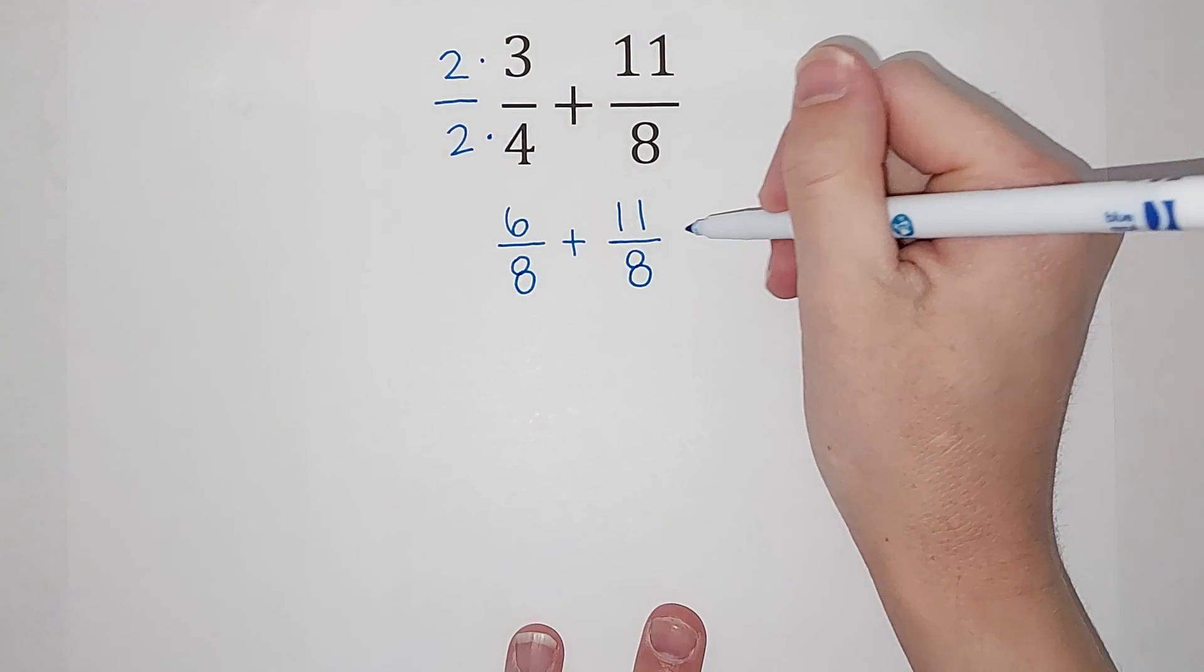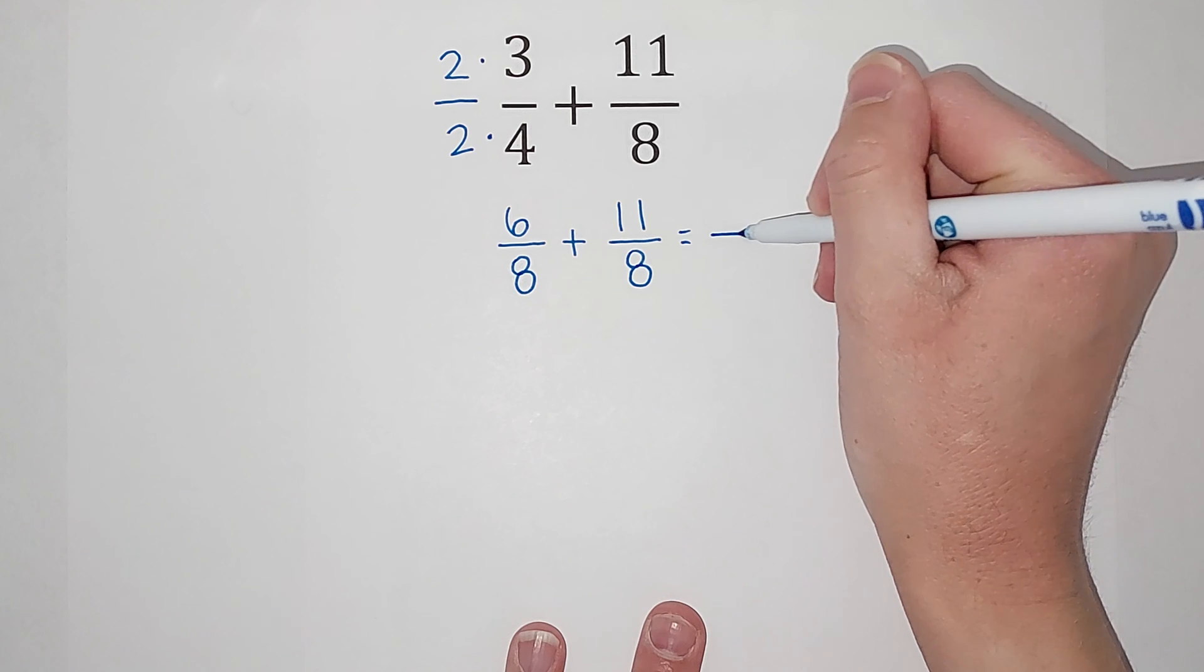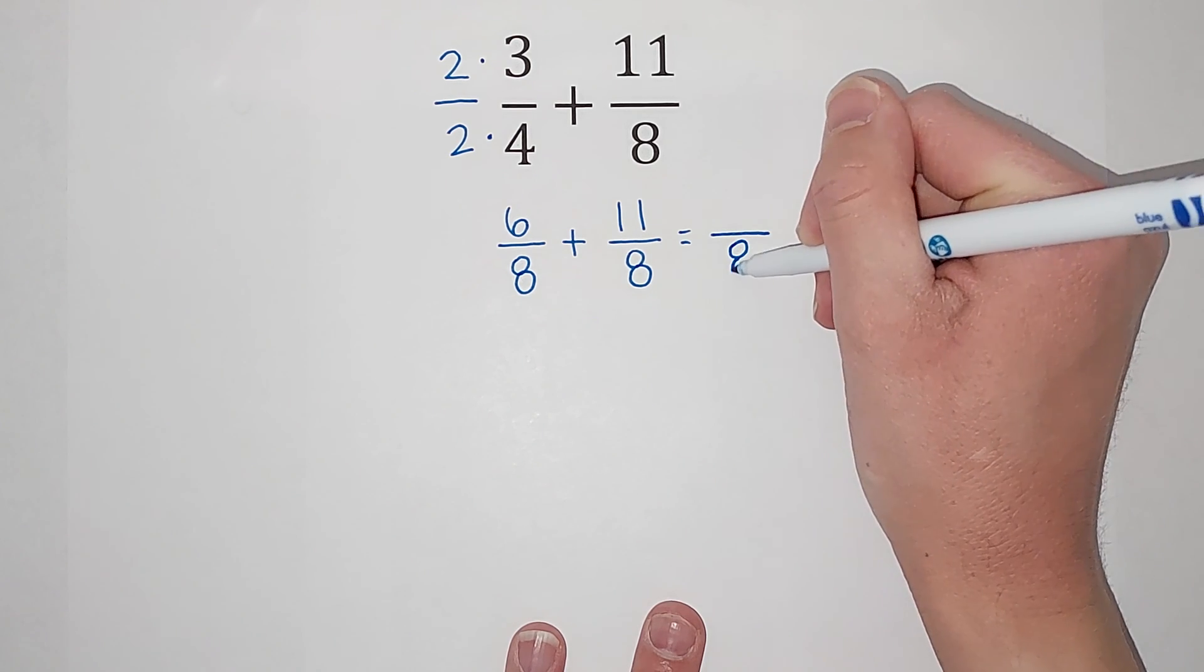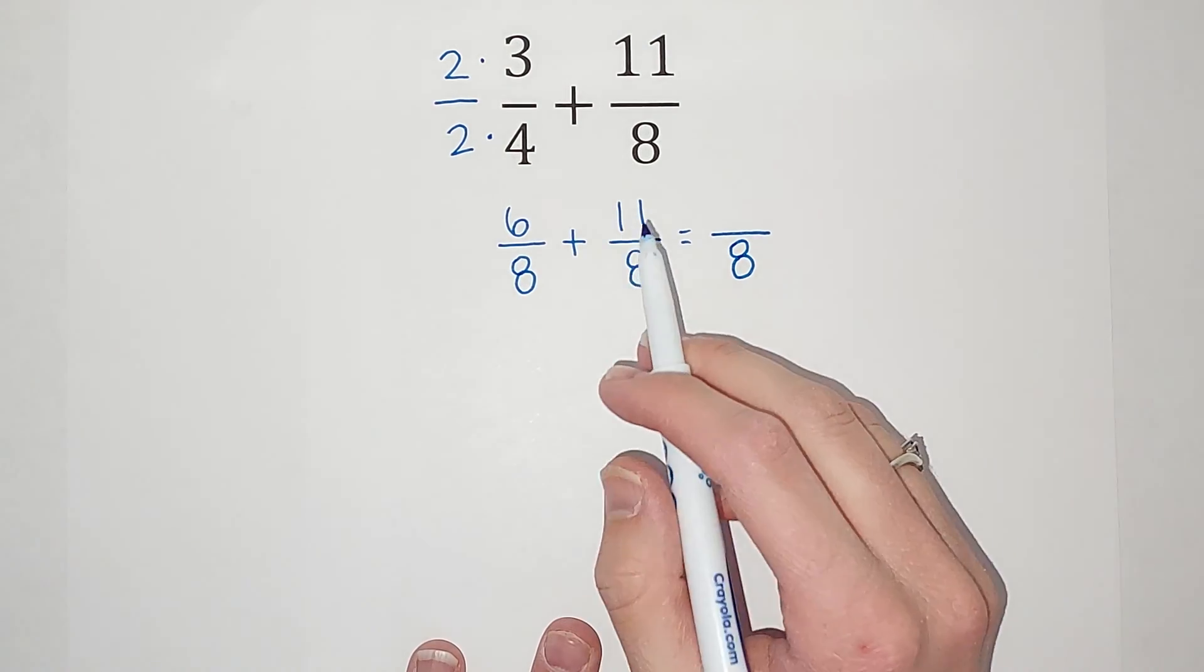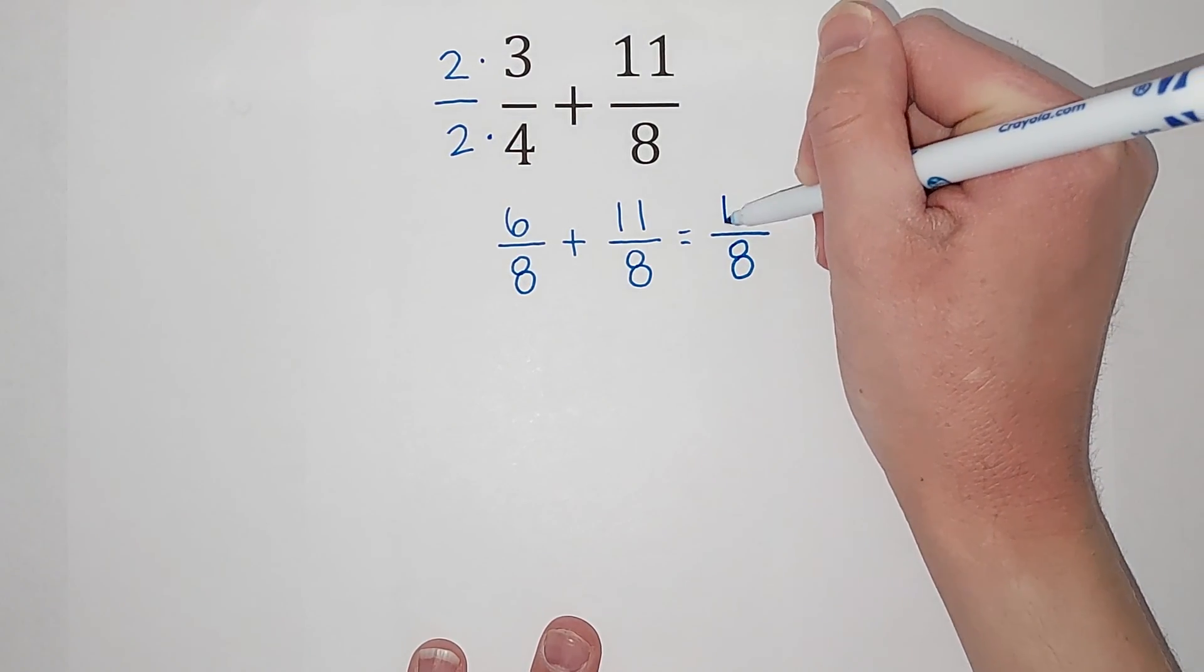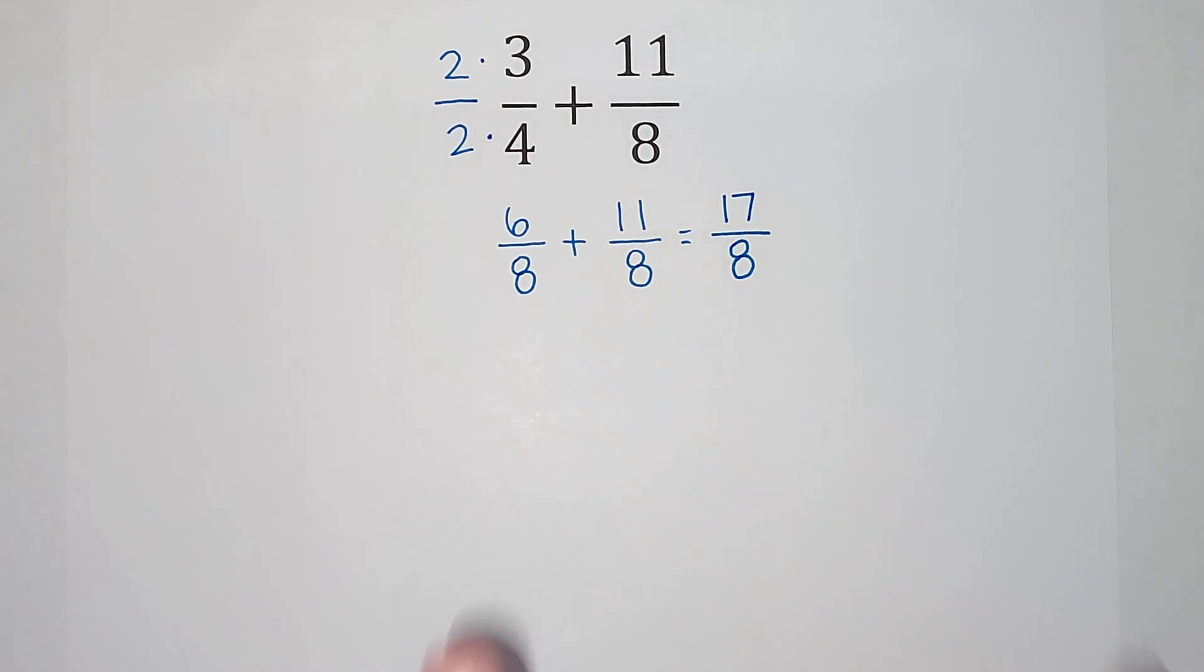When I add fractions, my denominator stays the same in my answer. That's why we needed them to be the same. And then I'm going to add the numerator. So six plus 11 gives me 17. So that is my answer as an improper fraction.